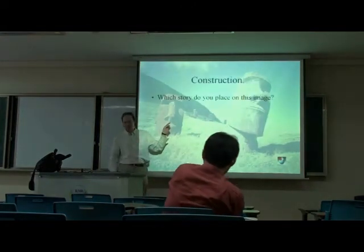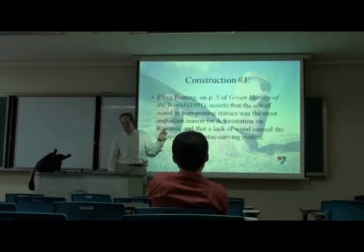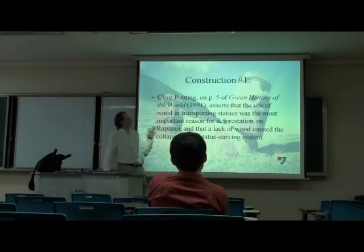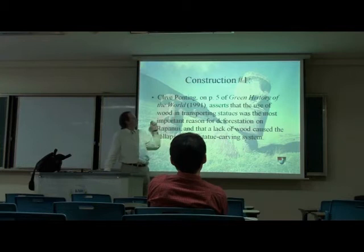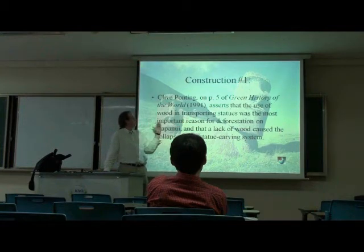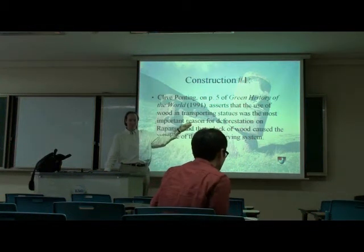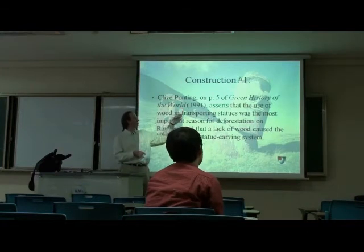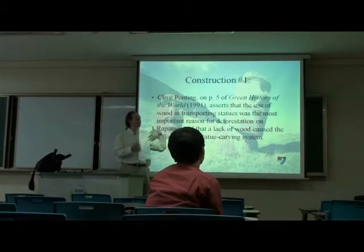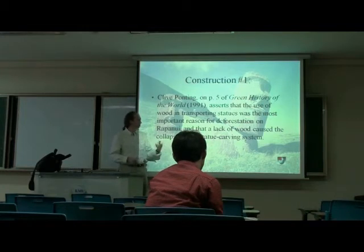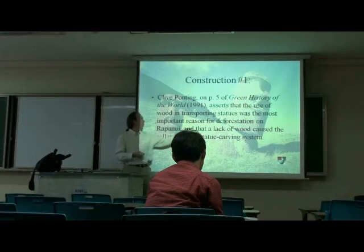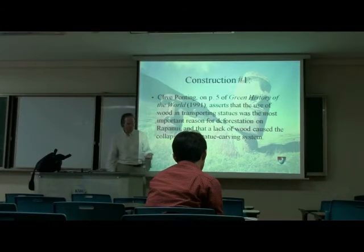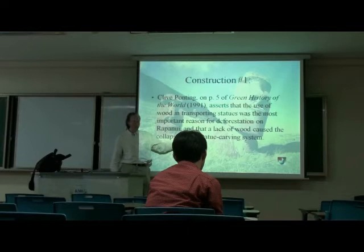So my point is: what construction do you place on this image? One construct comes from a 1991 book. Clive Ponting argues that the use of wood in transporting statues was the reason for deforestation. He could never have seen this for himself, but he constructed a story saying that humans deforested the area intentionally, and that led to the collapse of the statue carving system.